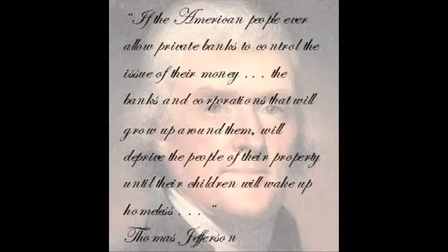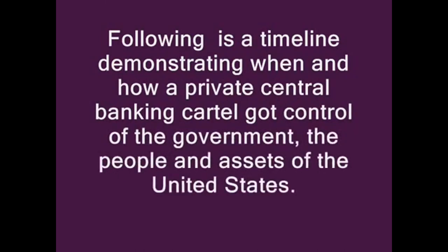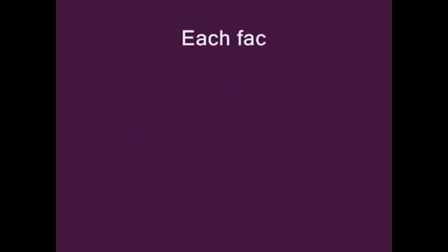"If the American people ever allow private banks to control the issue of their money, the banks and corporations that will grow up around them will deprive the people of their property until their children will wake up homeless." — Thomas Jefferson. Following is a timeline demonstrating when and how a private central banking cartel got control of the government, the people, and the assets of the United States. Each fact is supported by official sources. Source documents are available at www.anticorruptionsociety.com under the tab 'Source Documents.'